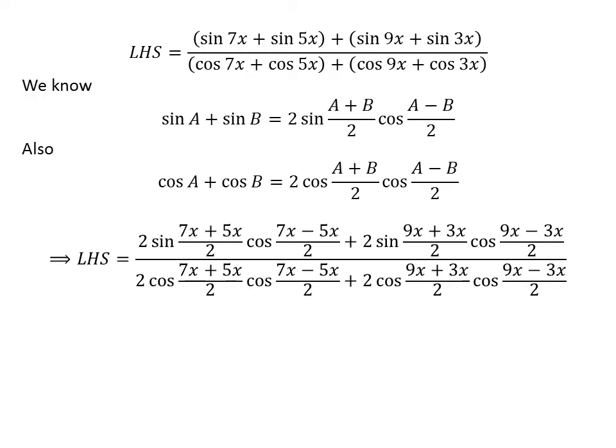Applying the above identities, the left-hand side becomes: 2 times sine of (7x plus 5x)/2 times cosine of (7x minus 5x)/2, plus 2 times sine of (9x plus 3x)/2 times cosine of (9x minus 3x)/2, in the numerator; and similarly for the denominator using the cosine sum identity.